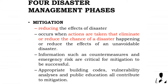Mitigation involves reducing the effects of a disaster. Mitigation occurs when actions are taken that eliminate or reduce the chance of a disaster happening, or reduce the effects of an unavoidable disaster. Information such as countermeasures and emergency risk are critical for mitigation to be successful. Appropriate building codes, vulnerability analyses, and public education all contribute to mitigation.